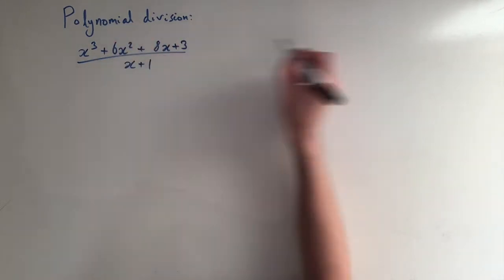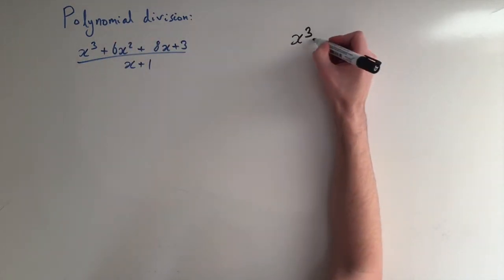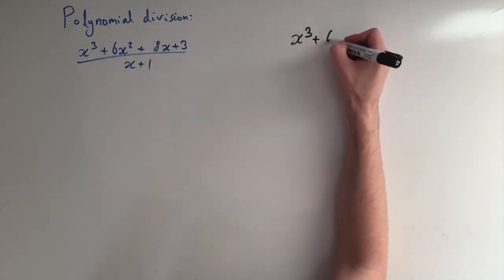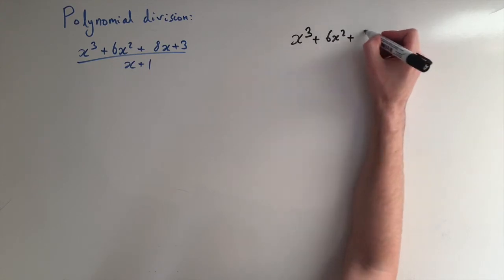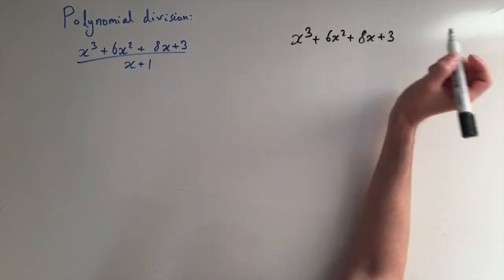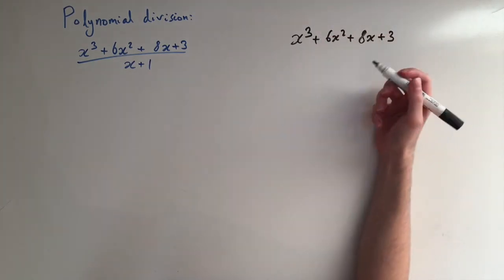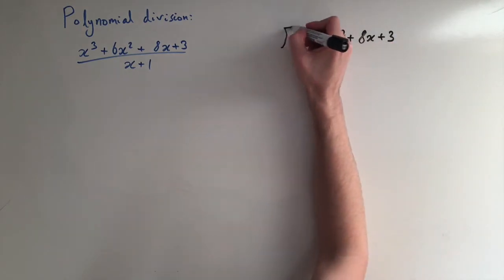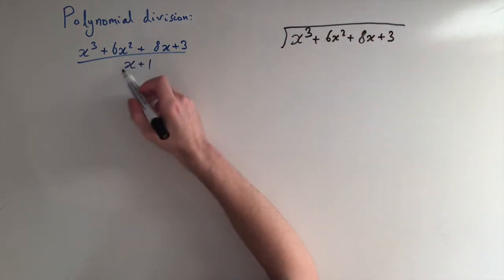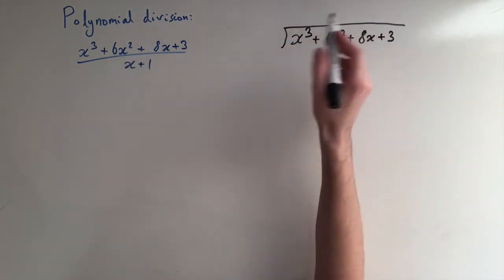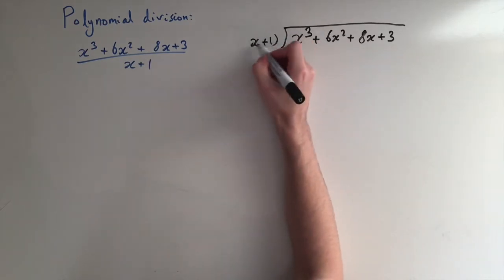We're going to start off by writing our polynomial. So we have x cubed plus 6x squared plus 8x plus 3. Thinking of long division, we draw the division symbol and then we write what we're dividing by on the left side — that's x plus 1 here.